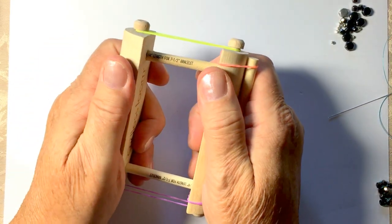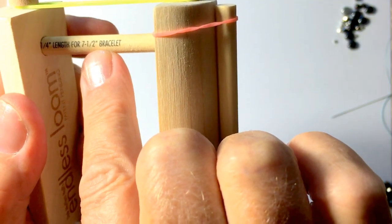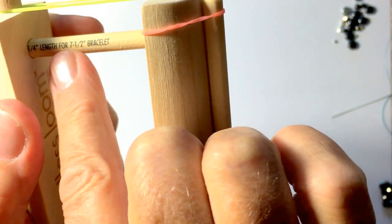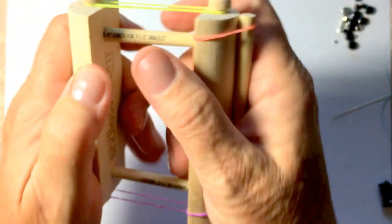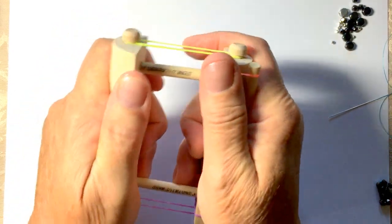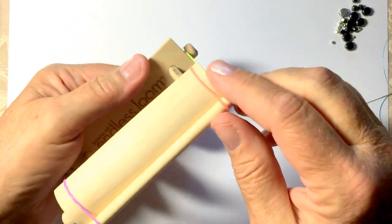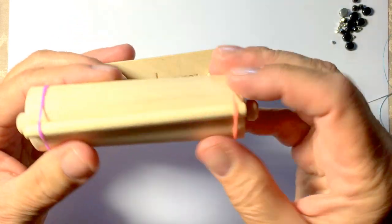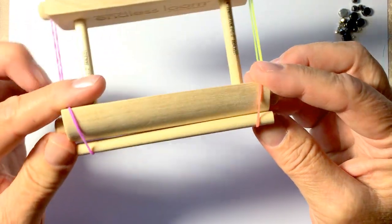So you've assembled your loom by choosing the stretcher bars, spacer bars that correlate with what size bracelet you want to make. This is a seven and a half inch. And you slot them into the sockets on your end pieces. Elastics hold it together. And you've chosen your easement bar that correlates with what size beads you're going to be using.